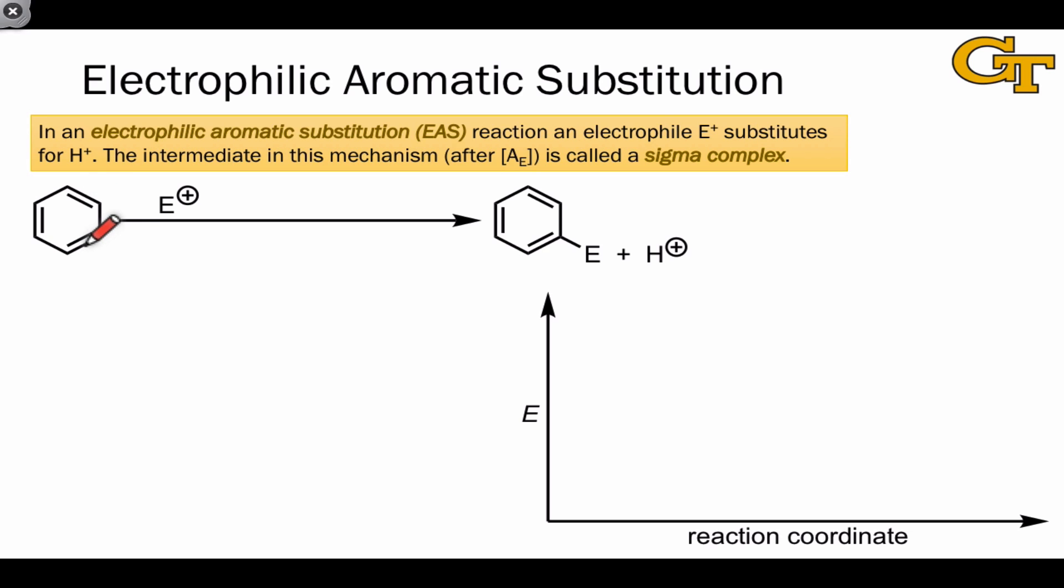The first general step is one we're very familiar with from reactions of alkenes with electrophiles. It's coordination of the aromatic pi bond to E+. This is association of the electrophile to the aromatic pi system, or A sub E, and the intermediate that's generated by this step contains a new bond between the electrophile and one of the carbons of the aromatic pi system.